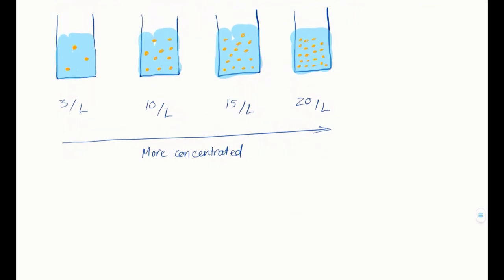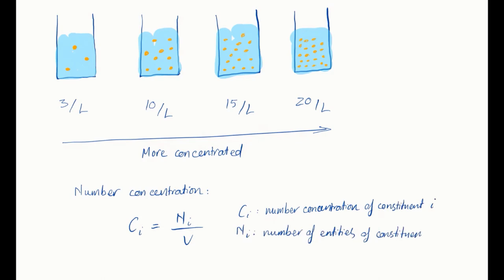So these concentration values are actually called number concentrations. There are many kinds of concentrations that you will see. Number concentration is defined as the number of entities of a constituent in a mixture divided by the volume of the mixture.